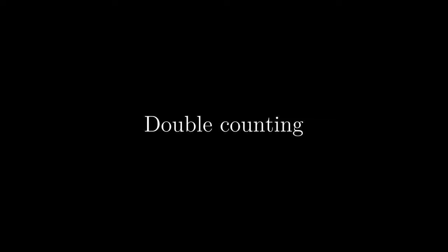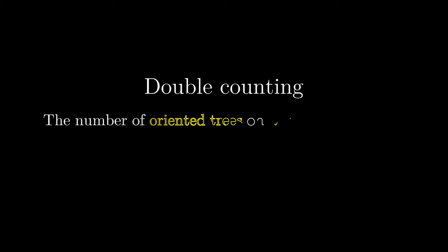As I've mentioned earlier the proof technique that we'll be using is double counting. This involves, as the name suggests, counting some quantity in two different ways. For this proof we'll be counting the number of oriented trees on n vertices that have a root and some numbering of edges. Let's call this quantity τ(n).